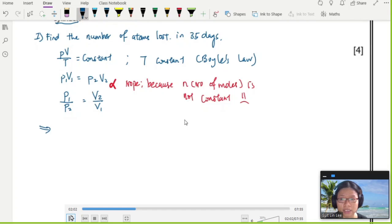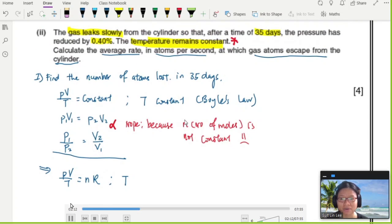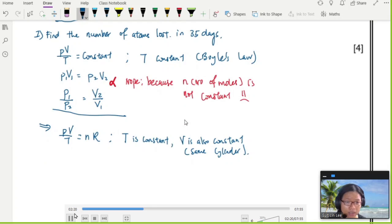We're going to still use PV/T = constant. But PV/T = nR. We re-identify our constants. Gas law only works for constant number of molecules. But right now, in this case, the temperature is constant and the volume is also constant. Same container, same cylinder, same volume.